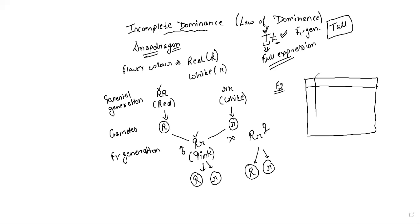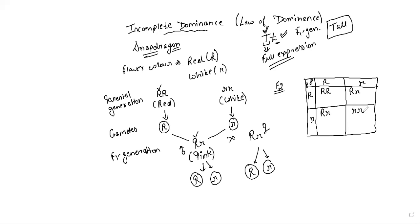We write down male gametes on one side and female gametes on the other — the bar can be changed, it is not fixed. Male gametes capital R and small r; female gametes also capital R and small r, because both parents have the same genotype, so both produce the same type of gametes. We combine them and write down all possible genotypes from these gametes.